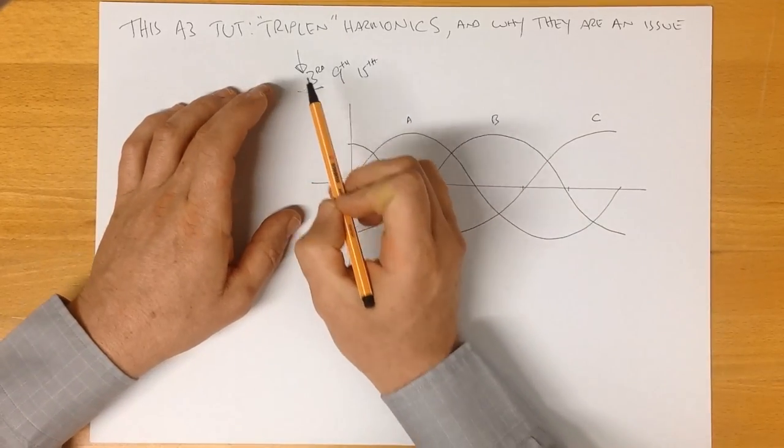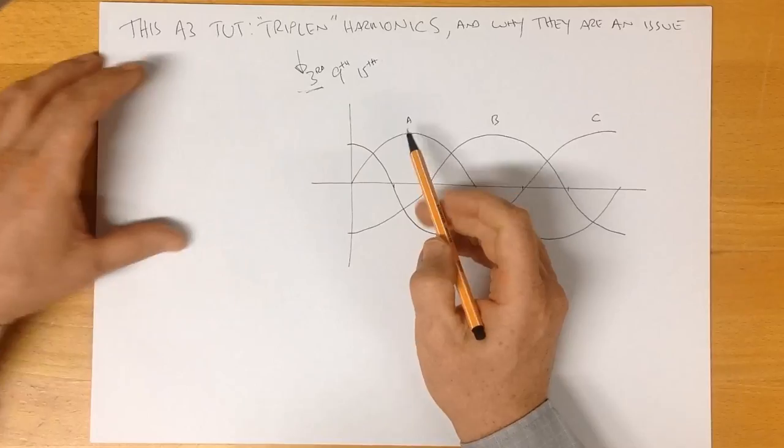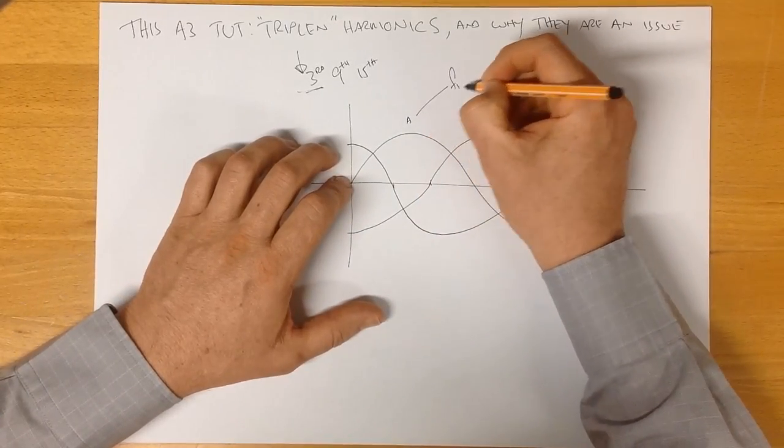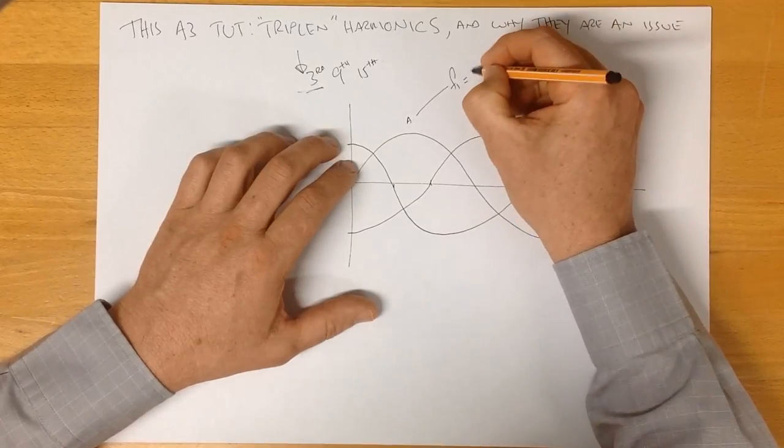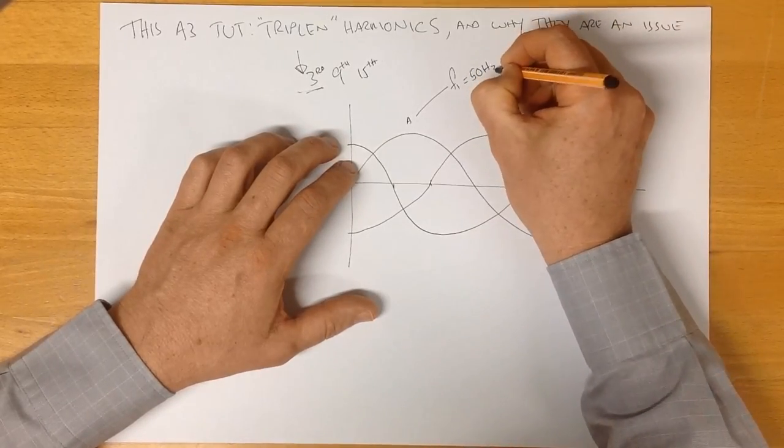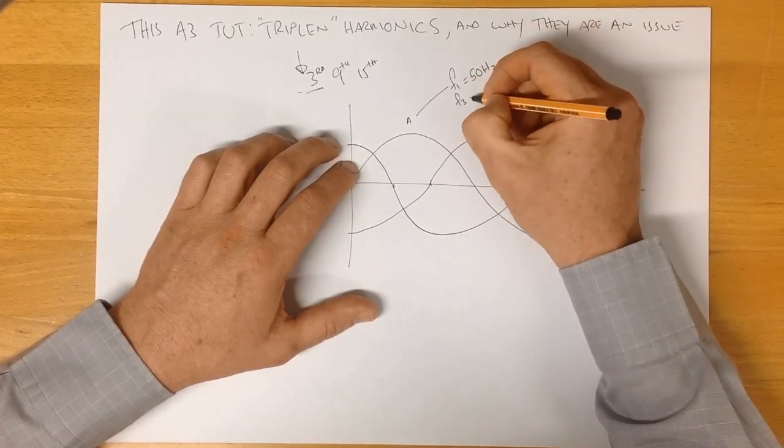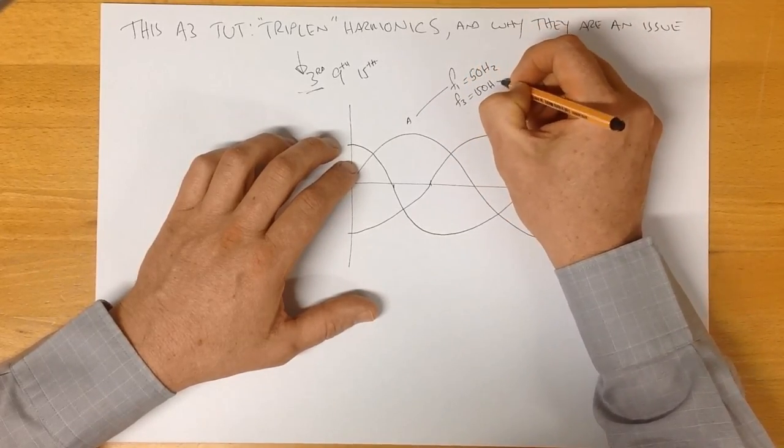Now a harmonic is a multiple of our fundamental. So for example if our fundamental was F1, if that was 50 hertz our third harmonic would be three times that would be 150 hertz.